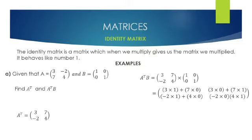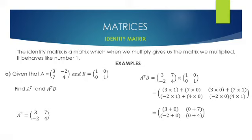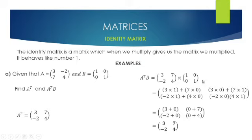After we do our multiplication we should have: three times one plus seven times zero, and three times zero plus seven times one. We do the same for the second row. After this we simplify what's in the brackets: we have three plus zero for this part, and zero plus seven for this part. Simplifying gives us three, seven, minus two, and four. You can see this matrix is the same as the transpose of A, so we can confidently say that matrix B is an identity matrix.